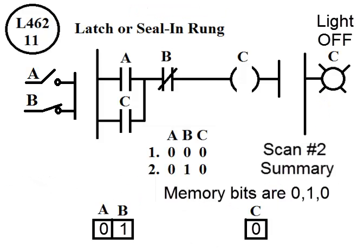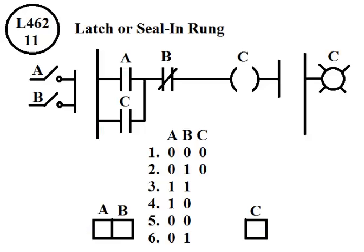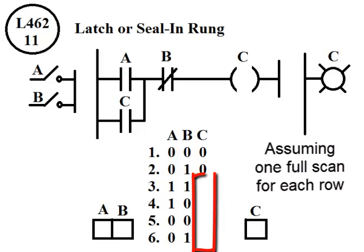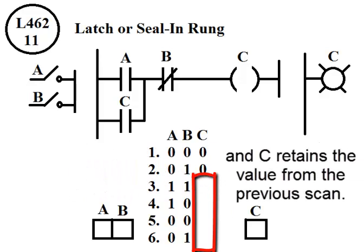Scan number 2 summary. Memory bits are 0, 1, 0. Can you complete the other possibilities in the order shown? Assuming one full scan for each row and C retains the value from the previous scan.